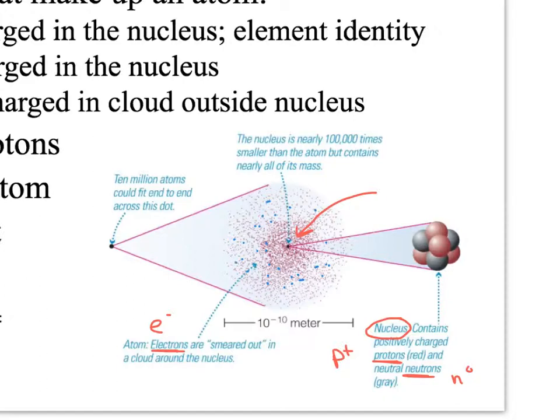The symbol for an electron is a lowercase e with a superscript negative because they're negatively charged. How much negative an electron is and how much positive a proton is, they cancel each other out with regard to charge if you have one of each. That's an atom - it has a nucleus with protons and neutrons, and electrons in a cloud outside the nucleus.